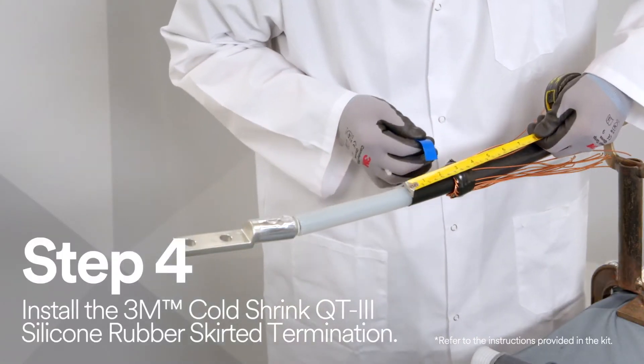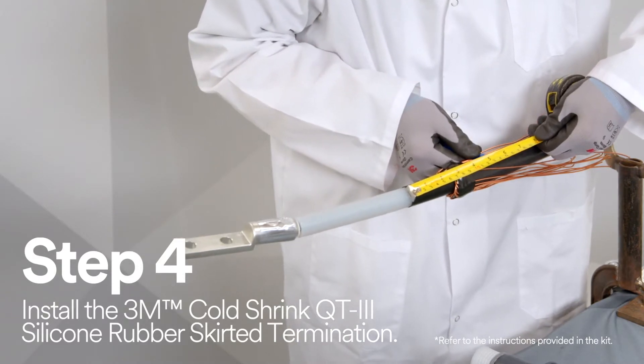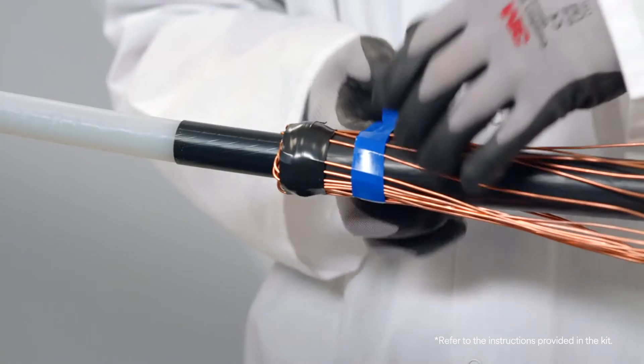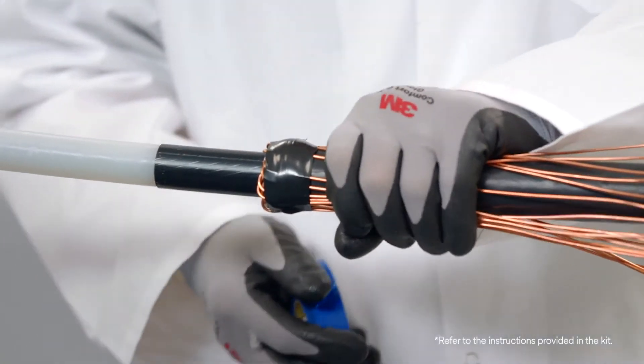First, start by adding marker tape. Secure Scotch Vinyl Color Coating Electrical Tape 35 to the cable jacket 4.5 inches from the cable semi-con edge.